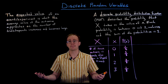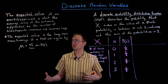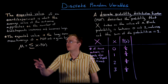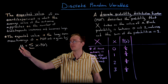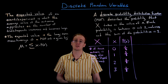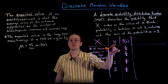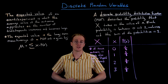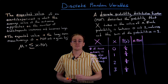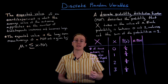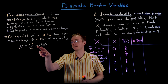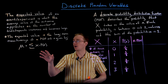The expected value is essentially our long-term mean of the discrete probability distribution function. We denote it with mu. To calculate it, we multiply each numerical outcome value little x by its probability P(x), and then sum all those products: mu = sum of x times P(x). We can add a column to our table for x times P(x) and then add those values up.